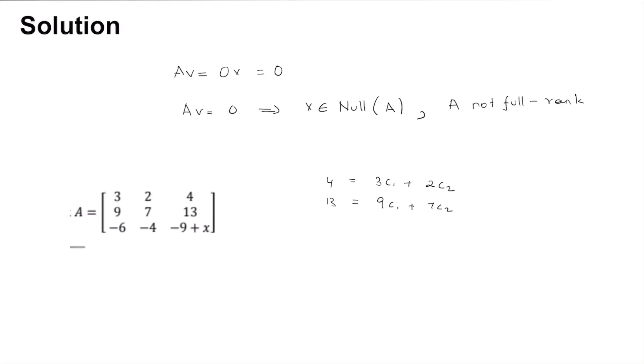I have linearly combined the two columns to get the third column. Now this is just a simultaneous linear equation set, and if you solve this you will get c1 is equal to 2/3 and c2 equal to 1 to satisfy it. So these are our two constants.